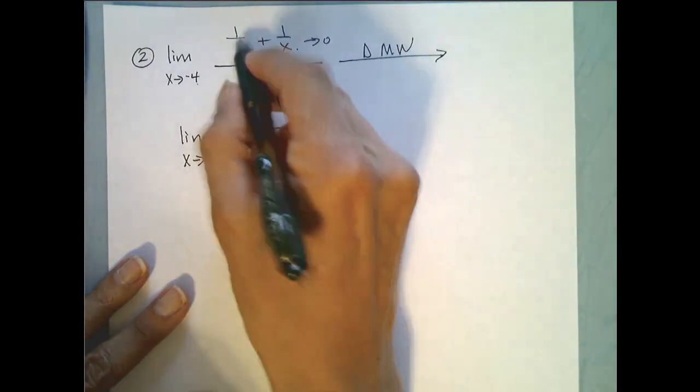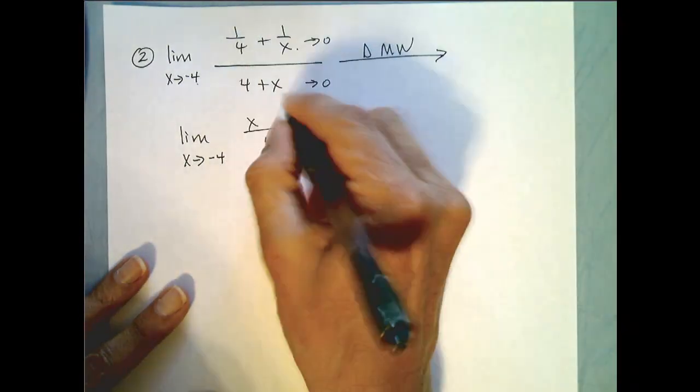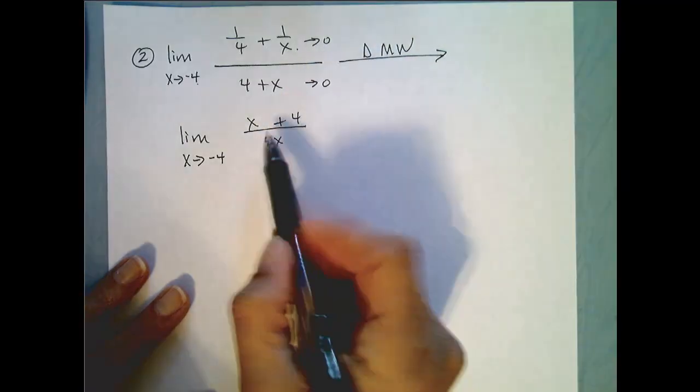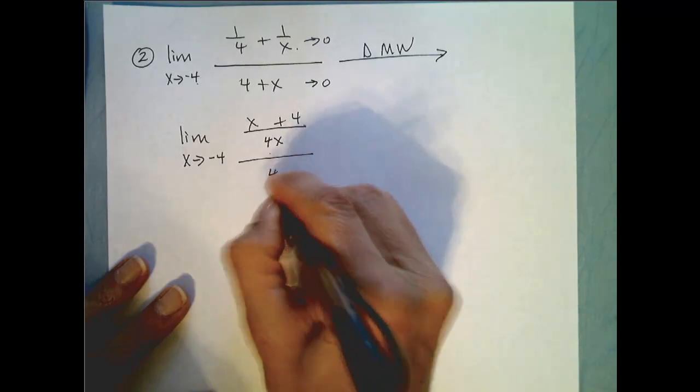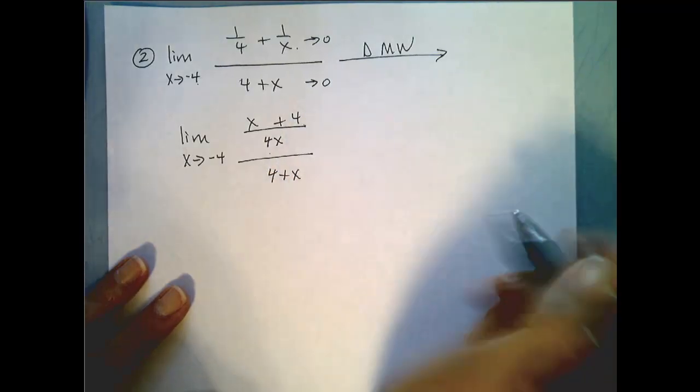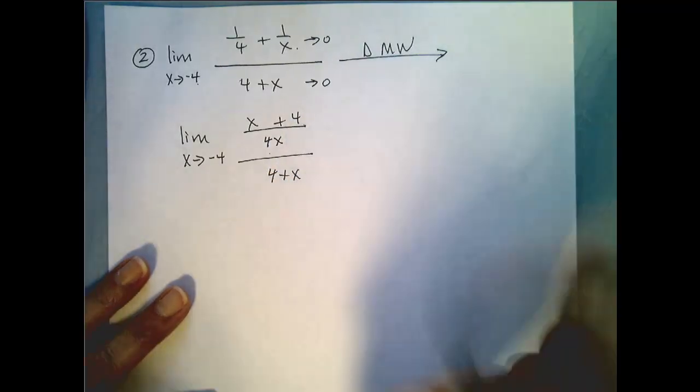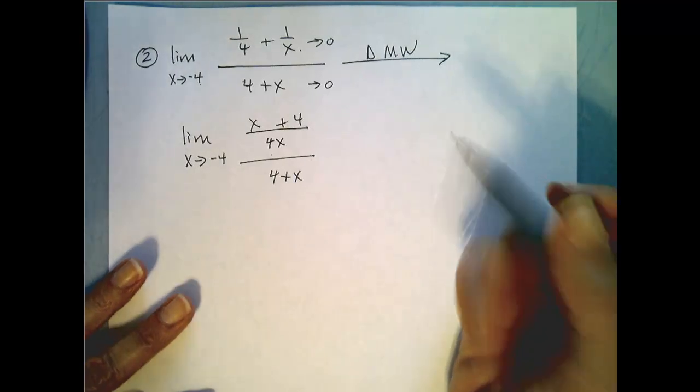So our top here becomes x and our top here becomes 4. So I have x plus 4 over 4x all over 4 plus x. Now I'm still not ready for direct substitution. There's more simplification that can be done.